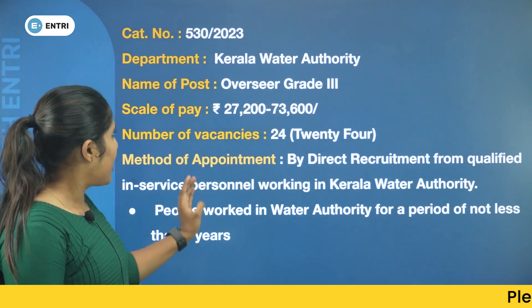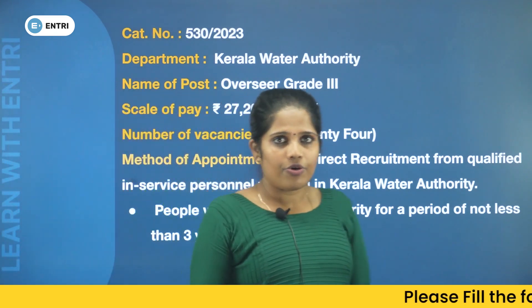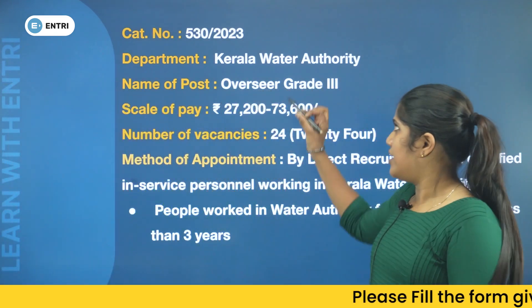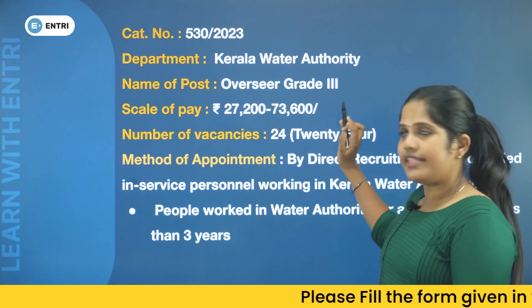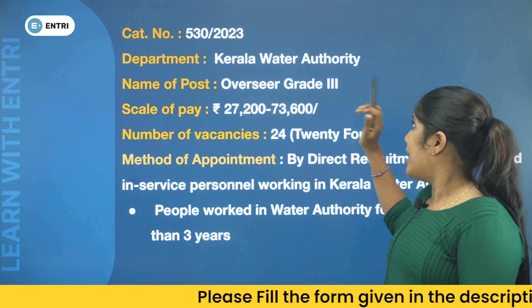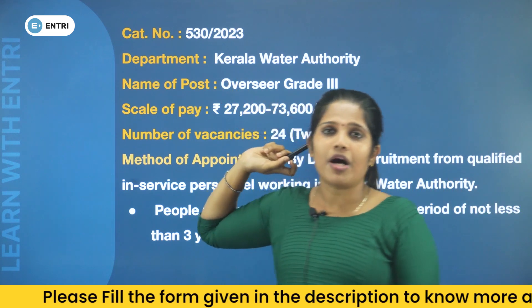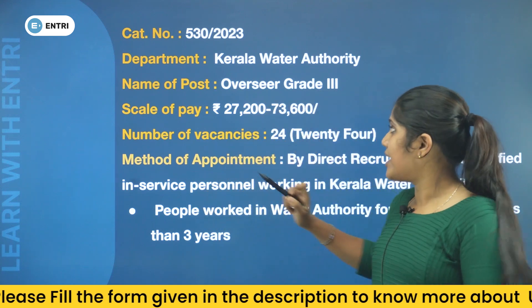You can get a notification on Kerala Water Authority. That is, Overseer Grade 3, Kerala Water Authority. Category number 530/2023.